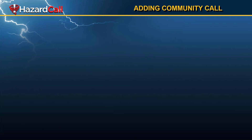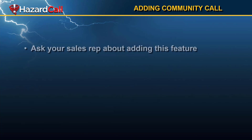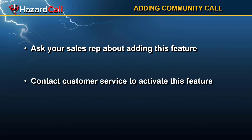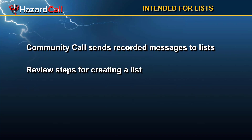To add Community Call, there is an extra charge. You want to talk to your sales rep about doing this, but typically it will cost an additional 10% of your annual cost of Hazard Call. Once you've asked your sales rep to add it, you need to contact customer service so that they can activate this feature and you can begin using it.